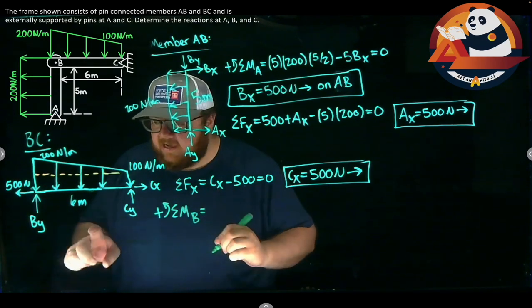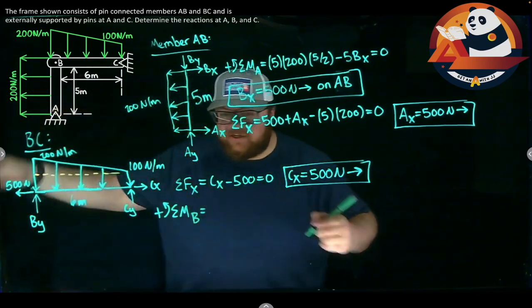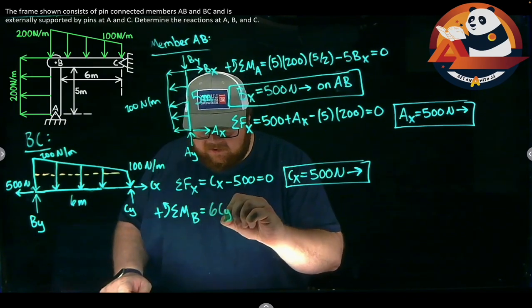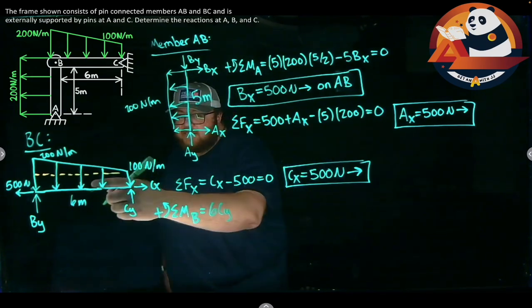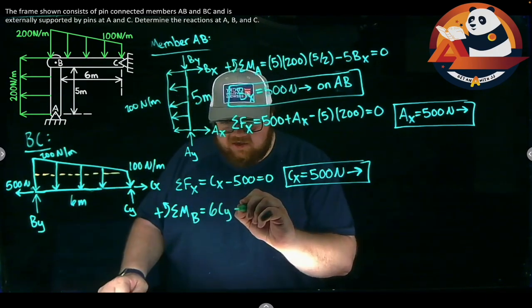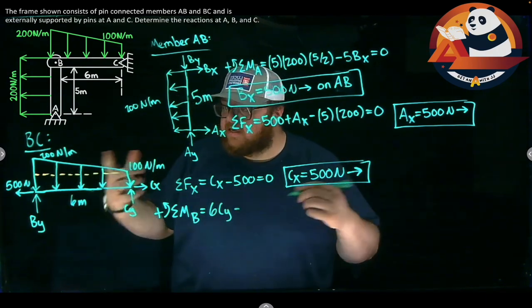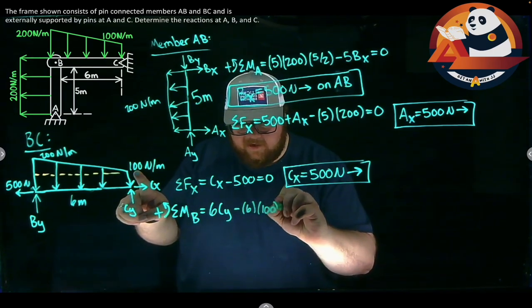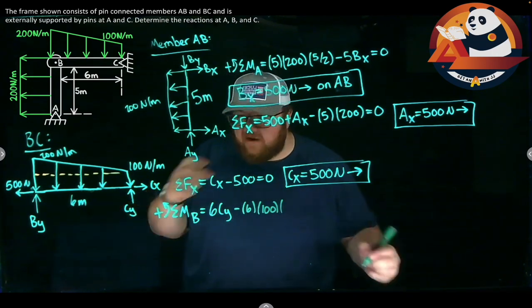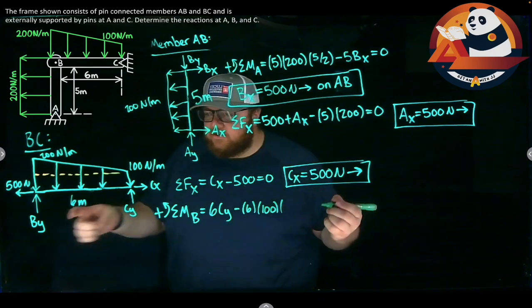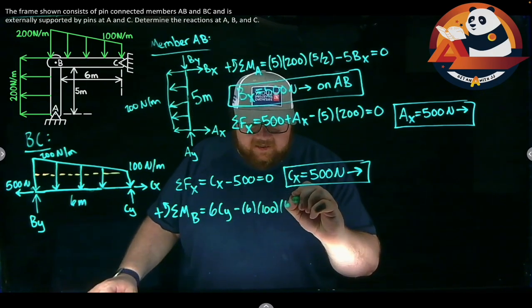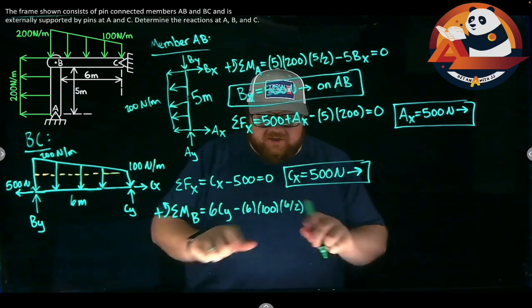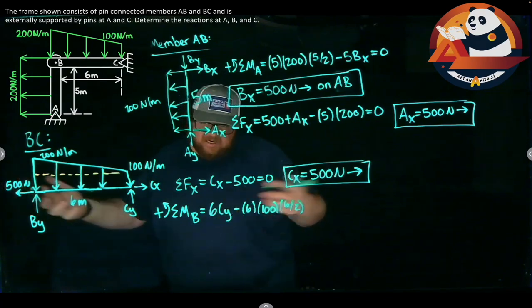If I come in and do moments here with positive going counterclockwise, let's sum my moments up about point B. So that will give me CY causes a counterclockwise rotation. So I'll put it in as positive. Six CY. Force times distance. My rectangular distributed load will cause a clockwise rotation. So minus force is the area base six times my height 100 times the distance from B to the middle of the rectangle. Well that rectangle starts at B. So just half of the base. Six over two. Or I could just put directly three in. That gets it. Force six times 100 times distance. Six over two. Moment force times distance.